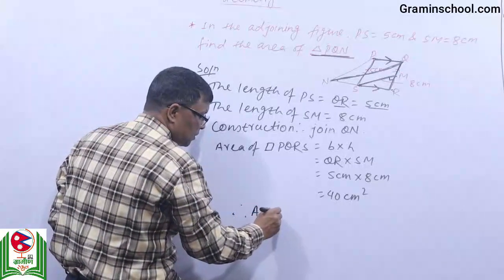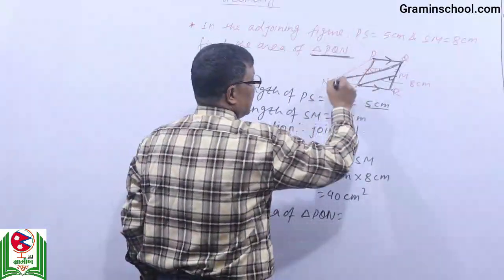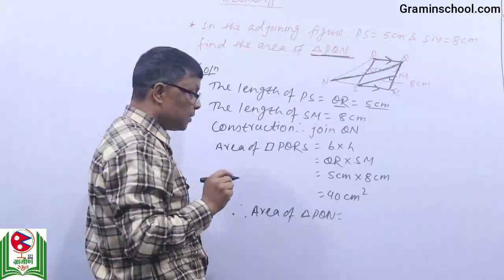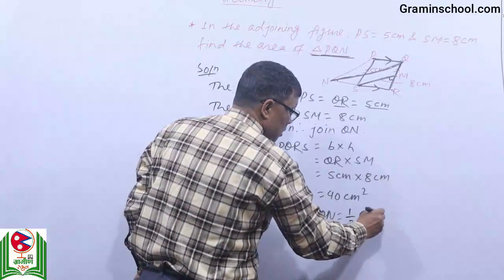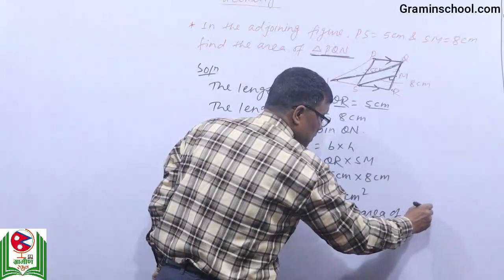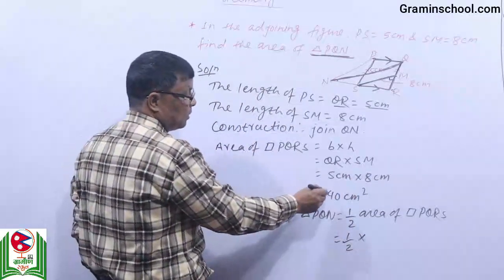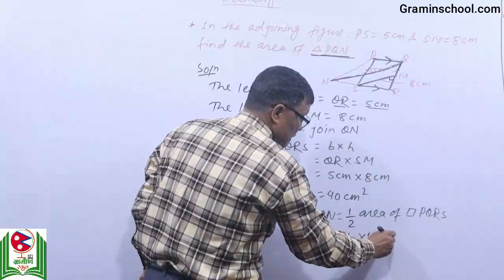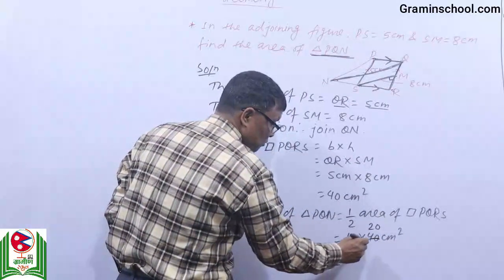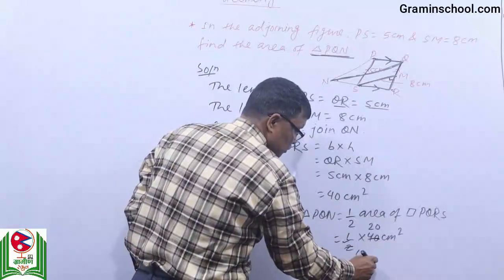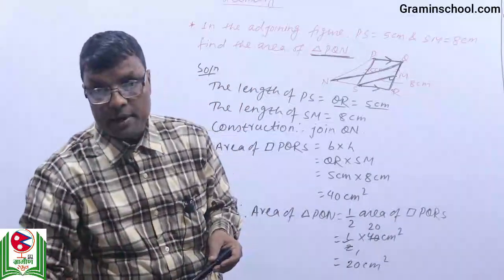Therefore, area of triangle PQN is equal to half the area of parallelogram PQRS, since the triangle and parallelogram share the same base and are between the same parallel lines. Half into 40 square cm equals 20 square cm. Area of triangle PQN is 20 square cm.